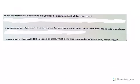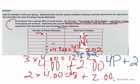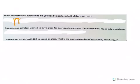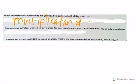What mathematical operations did you need to perform to find the total cost? Well, if you go back and look, 4P is multiplication, plus 2 is addition. So we used multiplication and addition. We used both operations to solve.